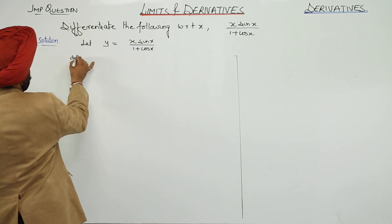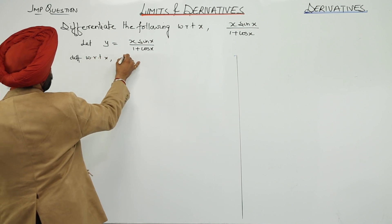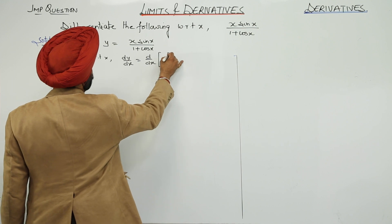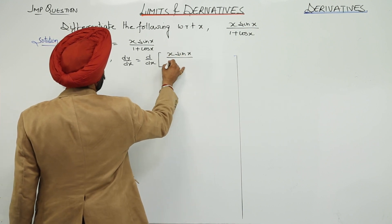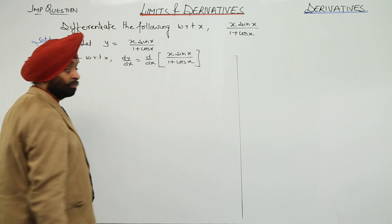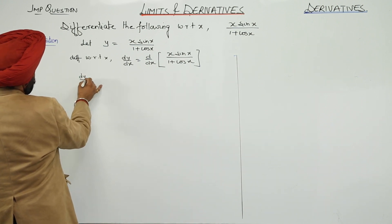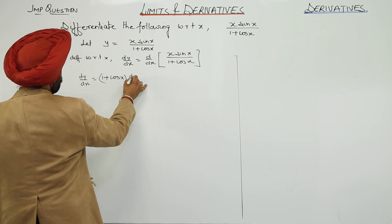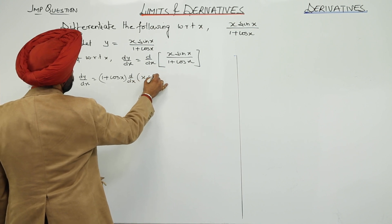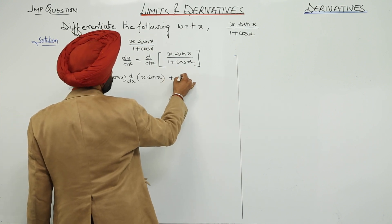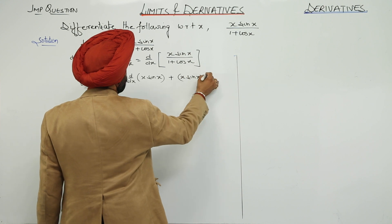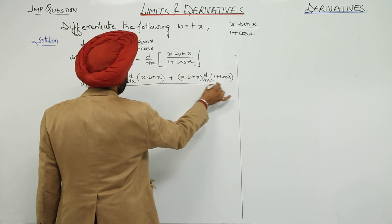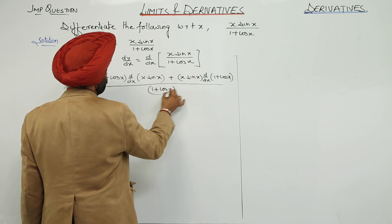Differentiating with respect to x: d/dx of y, that is dy/dx, is equal to d/dx of x·sin(x) upon 1 plus cos(x). Now, dy/dx is equal to 1 plus cos(x) as it is, then d/dx of x·sin(x), plus x·sin(x) as it is and d/dx of 1 plus cos(x), upon 1 plus cos(x) whole square.